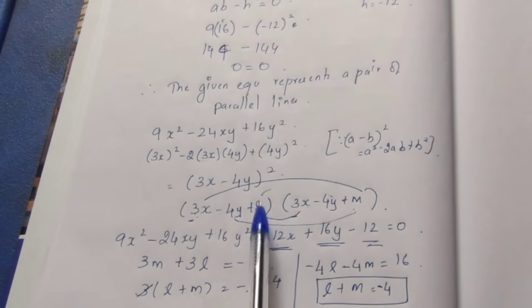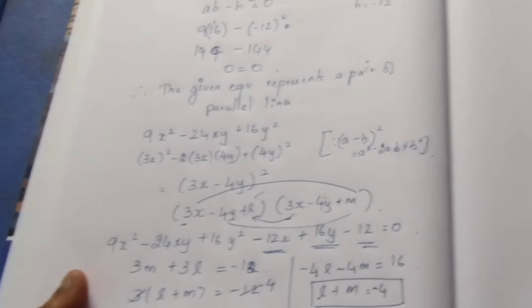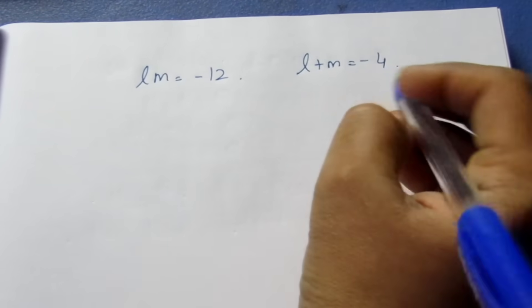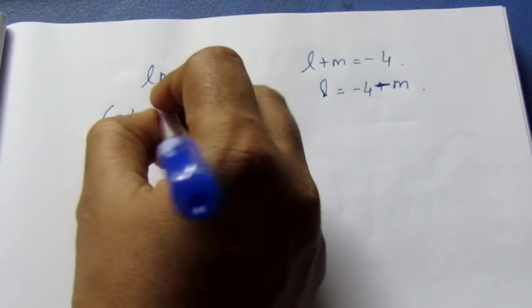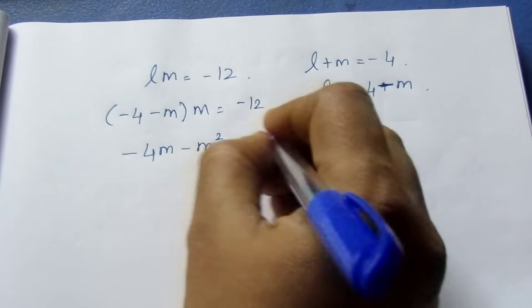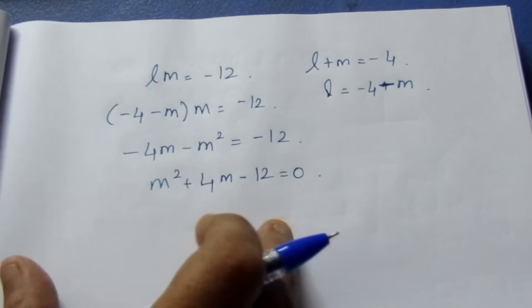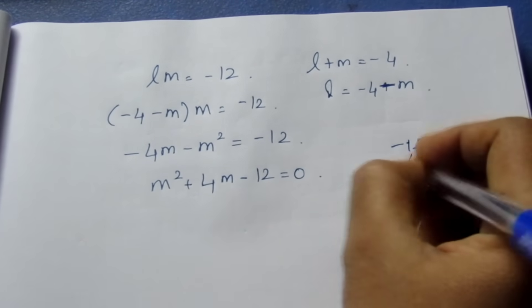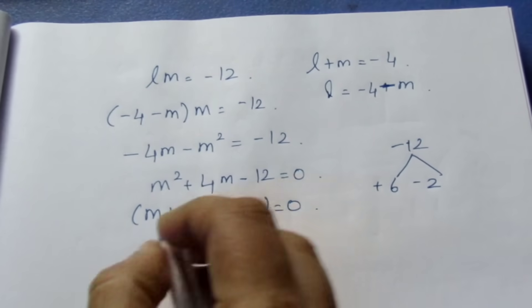From the constant term, l × m = -12. With l + m = -4 and substituting l = -4 - m, we get m² + 4m - 12 = 0. Factoring: (m + 6)(m - 2) = 0, so m = -6 or m = 2. Substituting back: when m = -6, l = 2; when m = 2, l = -6.